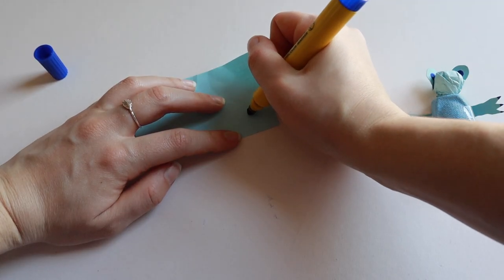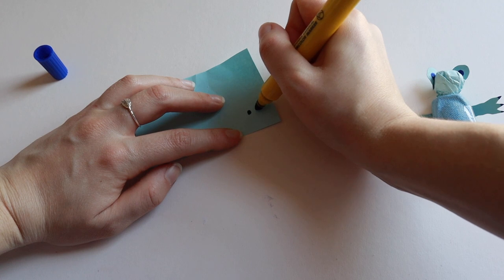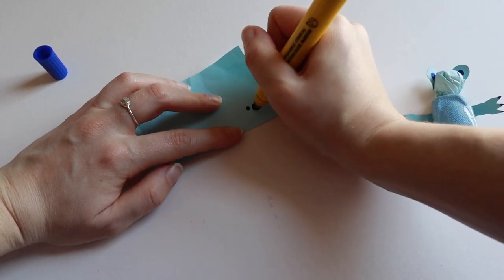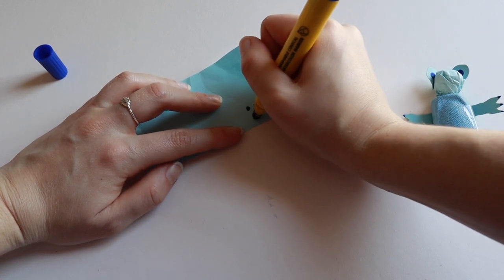The head of this bear is a little wrinkly, so drawing a face onto it would be tricky. So instead, I'm going to draw a face onto a separate piece of paper.